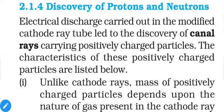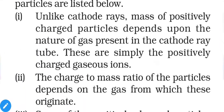The characteristics of these canal ray particles are as follows. First, unlike cathode rays, the mass of positively charged particles depends on the nature of the gas present in the cathode ray tube. If you use a comparatively heavier gas, the produced positively charged particles will have comparatively more mass. In the previous case — electrons — all gases produce the same type of electrons with the same mass, but here we get different results with different gases.